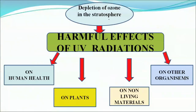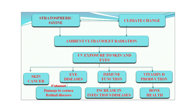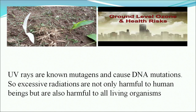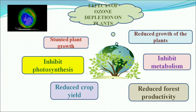Harmful effects of UV radiation: they affect human health, plant life, non-living material, and other organisms. UV rays are known mutagens and cause DNA mutations, so excessive radiation is harmful to all living organisms. Effects on plant life include: reduced growth of plants, inhibition of metabolic reactions, reduced forest productivity, reduced crop yield, and inhibition of photosynthesis resulting in stunted plant growth. There is also destruction of phytoplanktons.